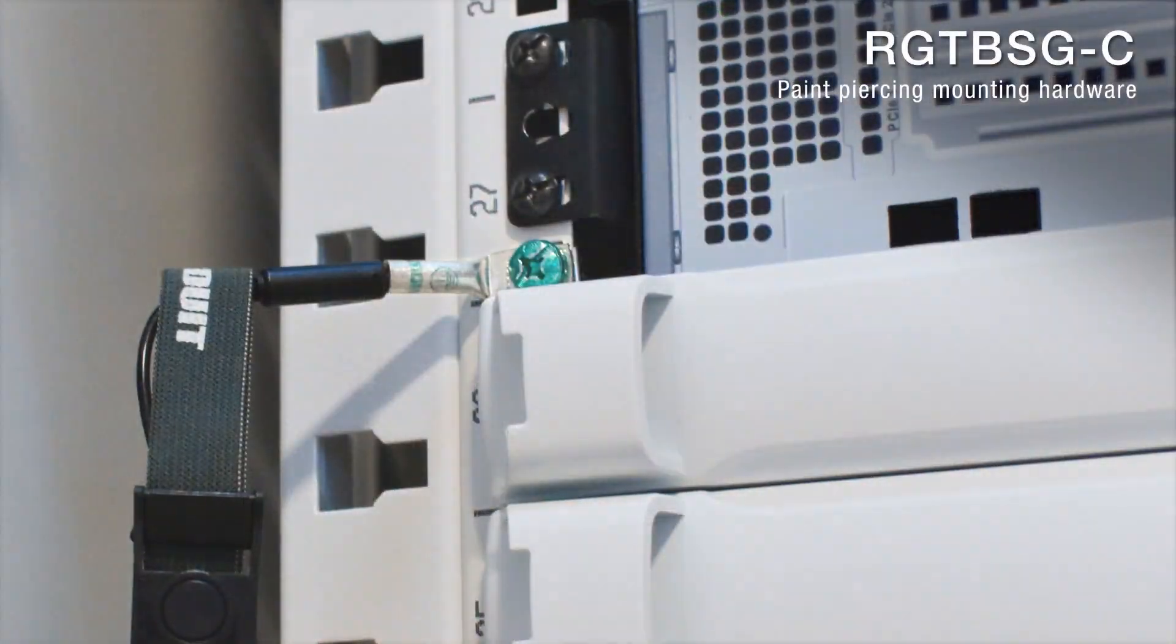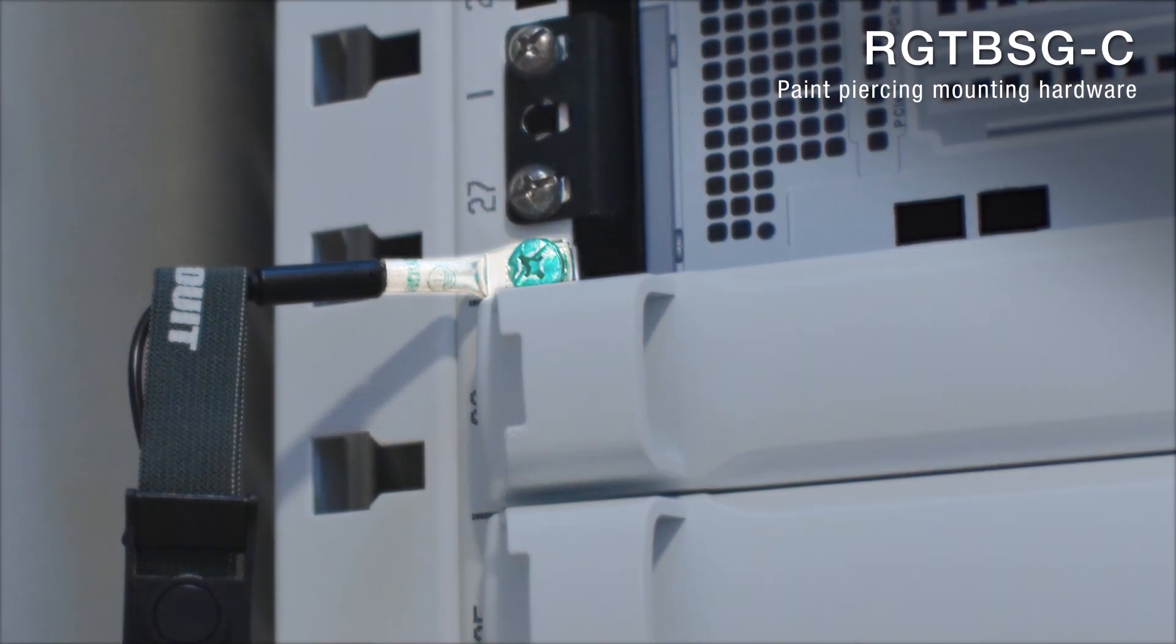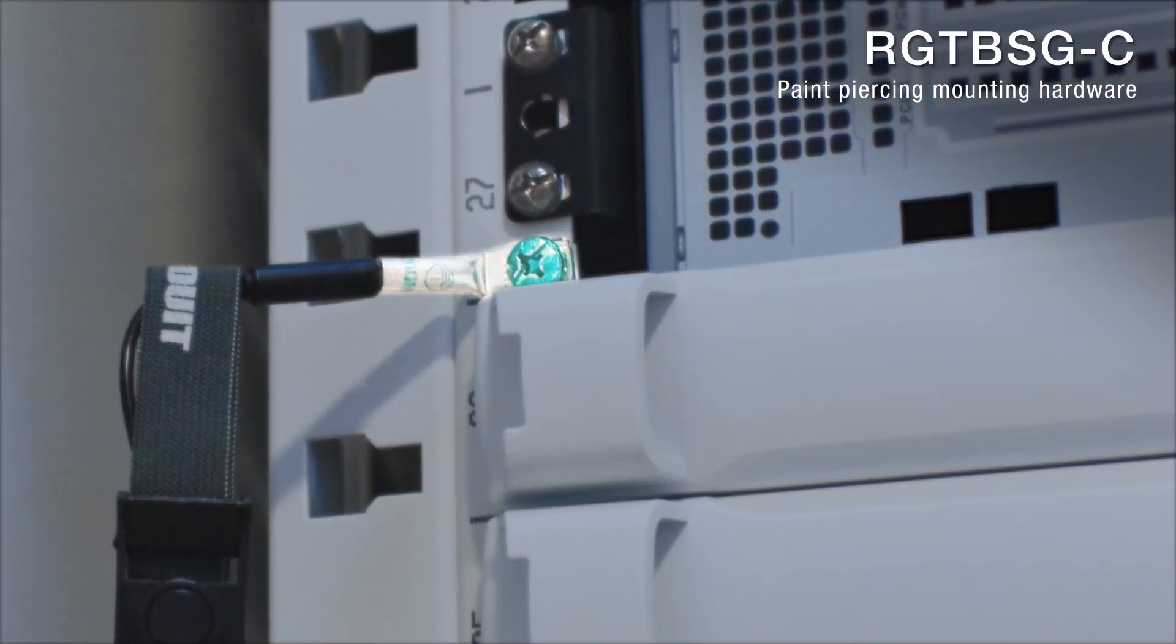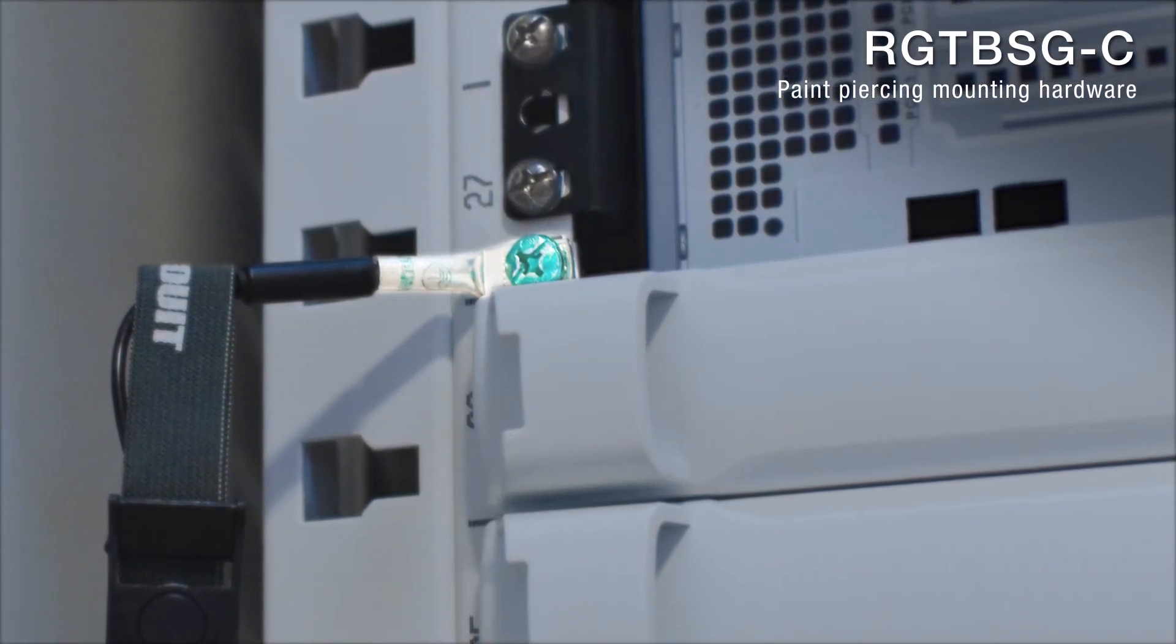If the equipment has metal flanges instead of a landing zone for a two hole lug, make sure to use paint piercing mounting hardware and to bond the flange to the rack or cabinet.